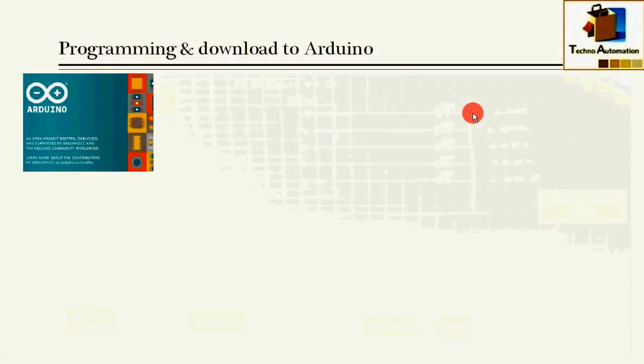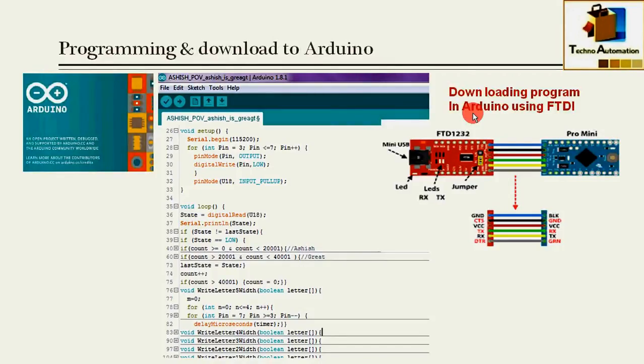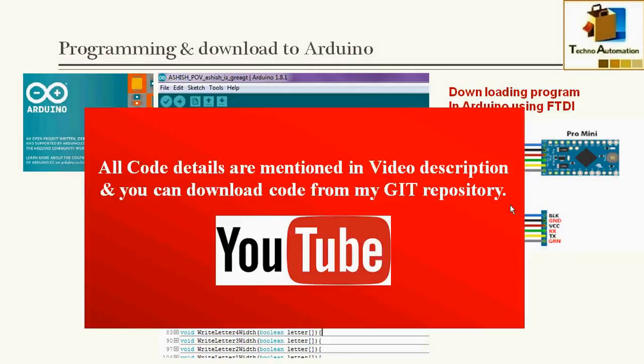After completion of the wiring, I have opened Arduino IDE and written down the code. After completion of code, I downloaded the code in Arduino Pro Mini using this wiring diagram. You don't need to worry about the code because all code details are mentioned in video description and you can download the code from my GitHub repository.